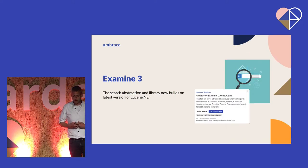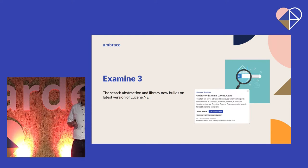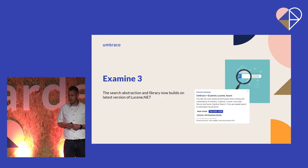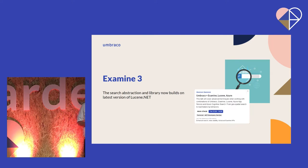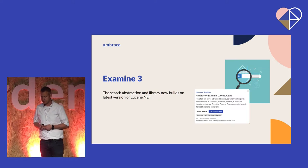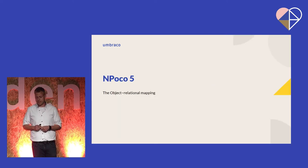Examine is also updated. Examine is the abstraction and library we use to do full-text search. The main update in the latest version is an updated dependency to Lucene.NET, so now it runs on the latest version. Again, it's a major upgrade, so there are some breaking changes if you use the APIs directly. And again, if you use it through Umbraco, we handle those for you. I'm sure Shannon will cover more about Examine in his talk on this stage tomorrow.